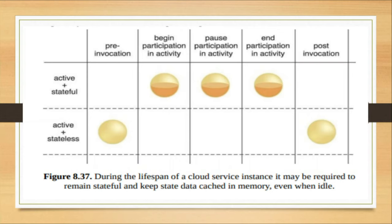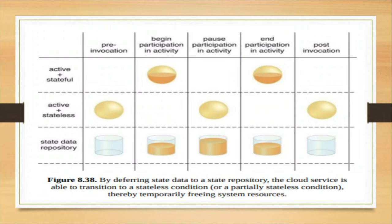So, at the end of that moment — active and stateful — and after end, post-invocation function, it is again empty and blank and stateless. So, if your process is paused, at that moment of time, to save bandwidth, the data is moved to the state repository. The state repository represents or stores the data. In the state repository, state data is stored, and the cloud service is able to transmit to a stateless condition.